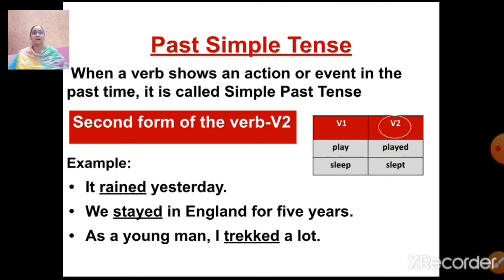Let us understand simple past tense with examples. 'It rained yesterday' — here the second form of verb is 'rained'. 'We stayed in England for five years' — here the second form of verb is 'stayed' (stay → stayed). 'As a young man, I tracked a lot' — here the second form of verb is 'tracked'.